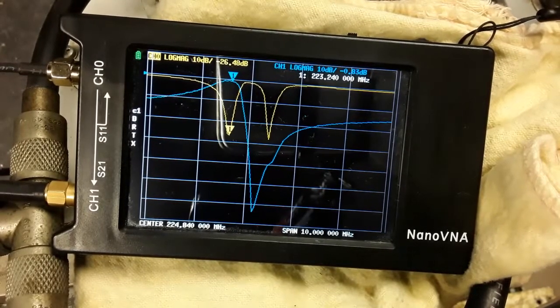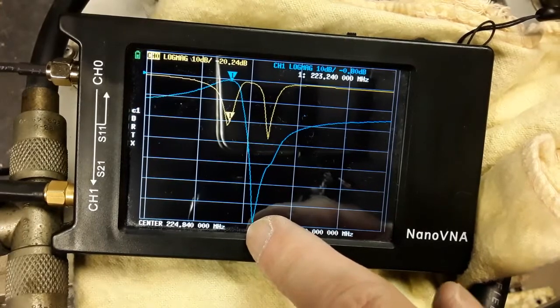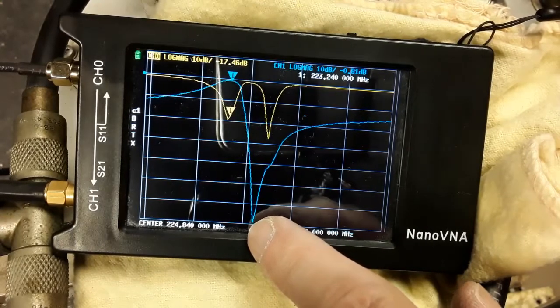Notice the double dip on the yellow trace. The left dip is for the receive bandpass and the right dip is for the transmit bandpass.